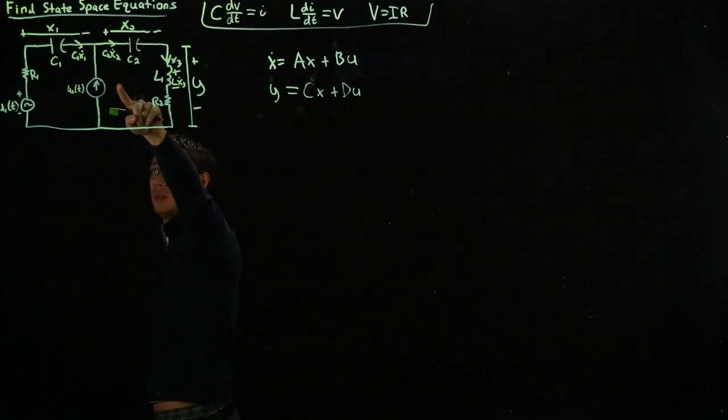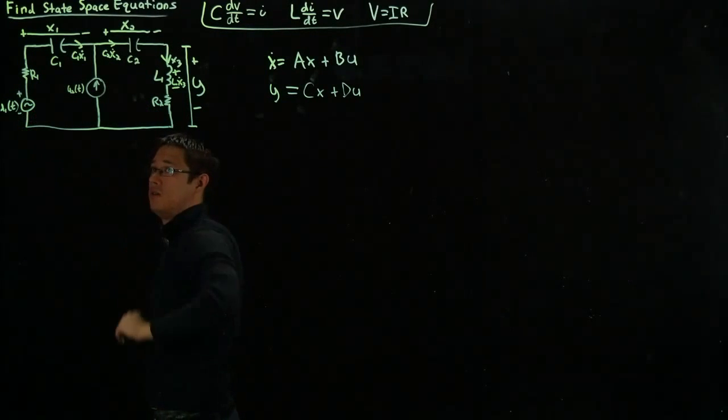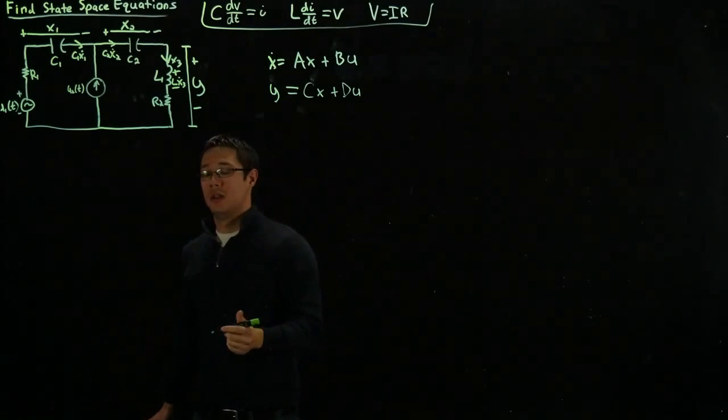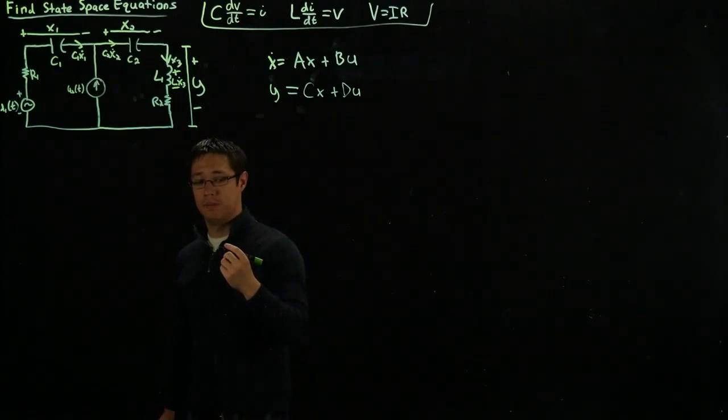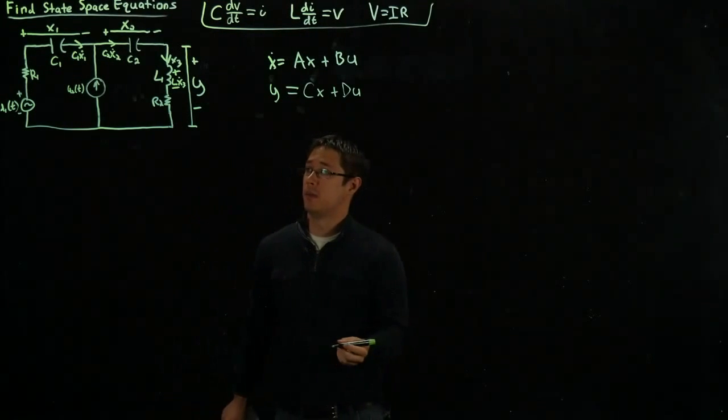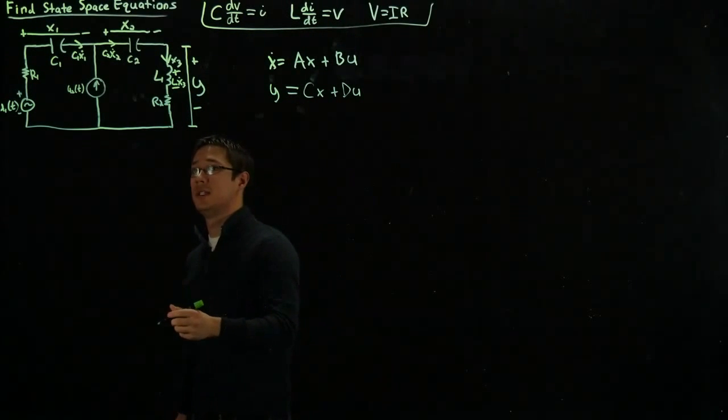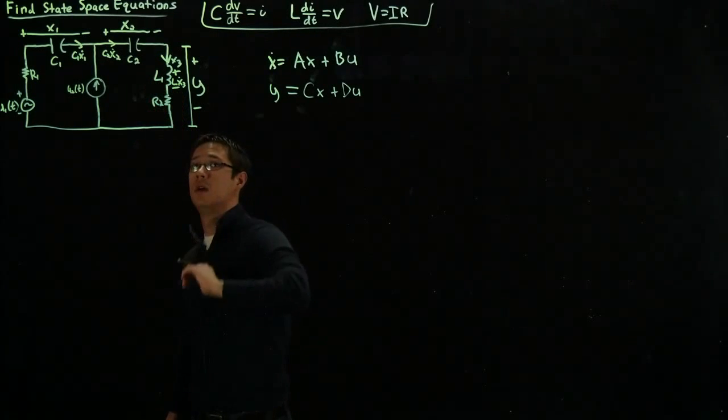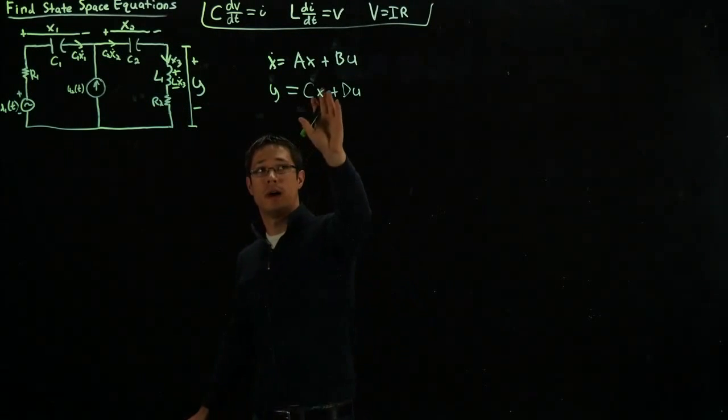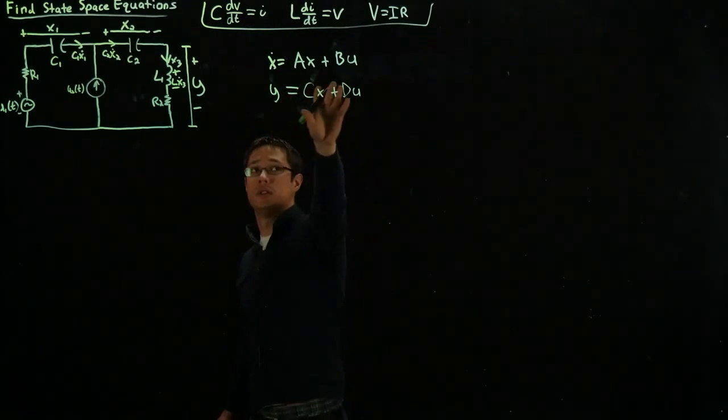Observe that we have two time varying inputs. One is a current source, U2, and the other is U1, a voltage source. With this knowledge, and using some simple theorems from circuits one, specifically KCL and KVL, we can determine how to find the solutions to this equation.